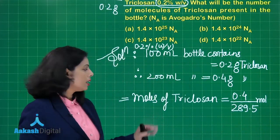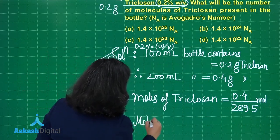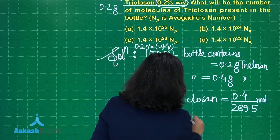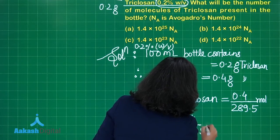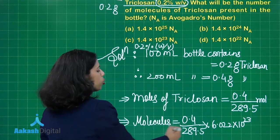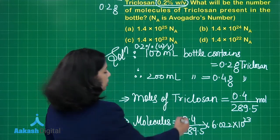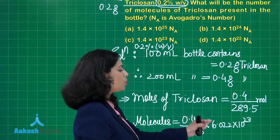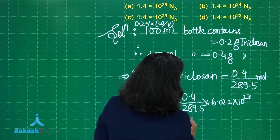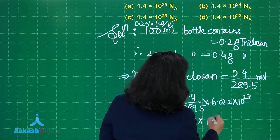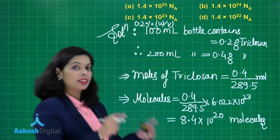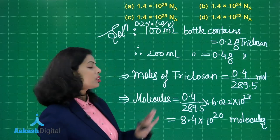The number of molecules equals moles multiplied by Avogadro's number. So it is (0.4 / 289.5) × 6.022 × 10²³. The final value of the number of molecules comes out to be 8.4 × 10²⁰. These are the number of triclosan molecules present in the 200 ml sanitizer bottle.